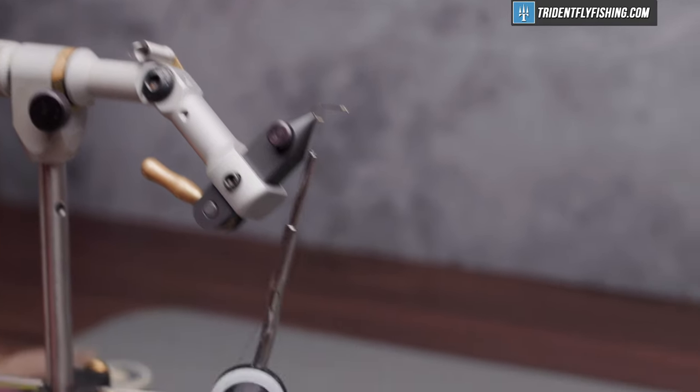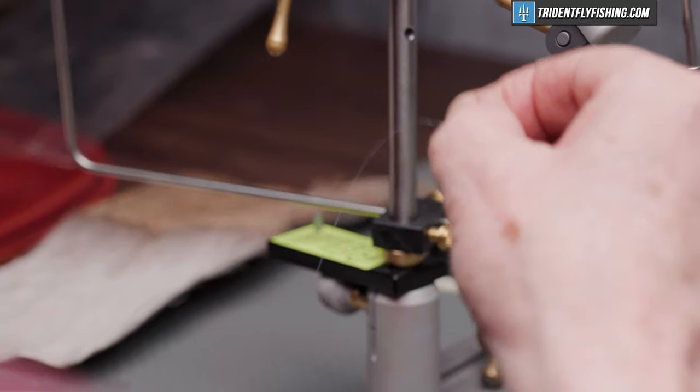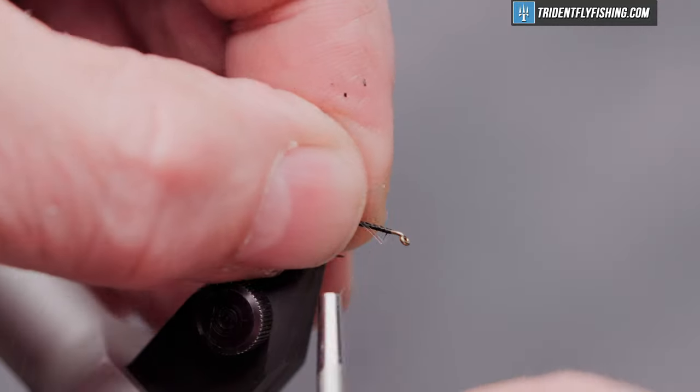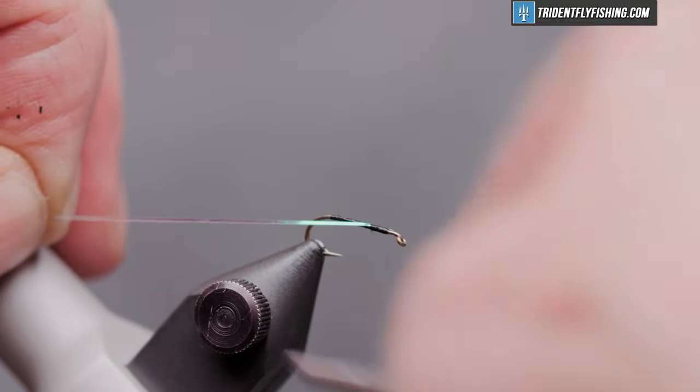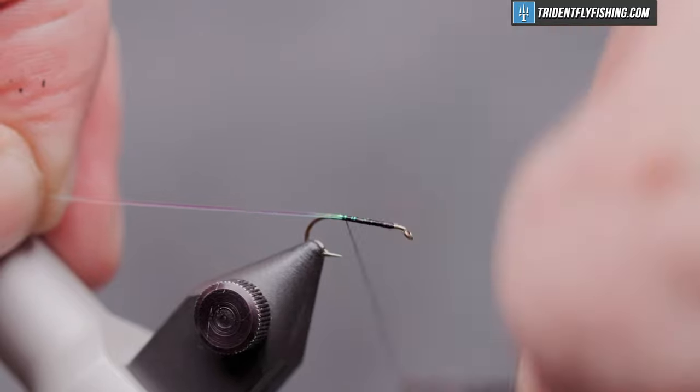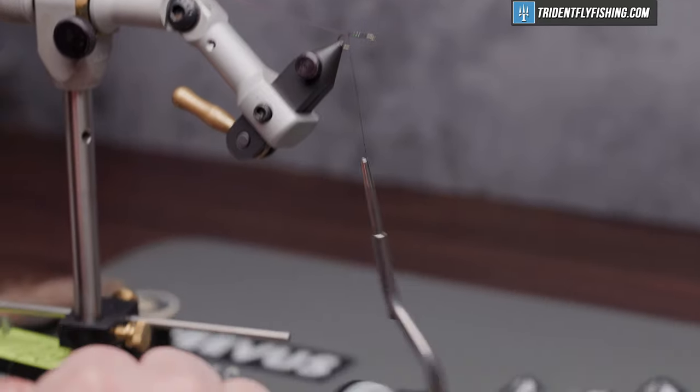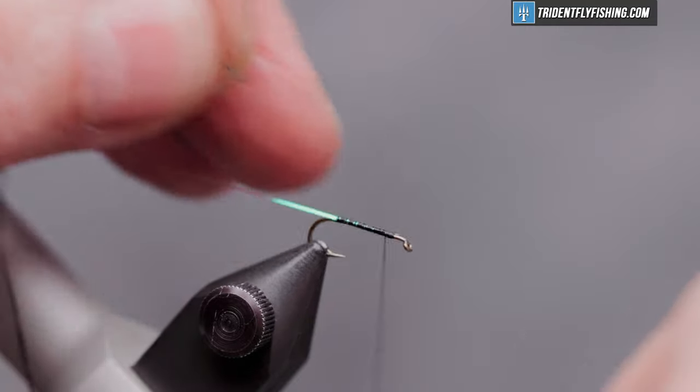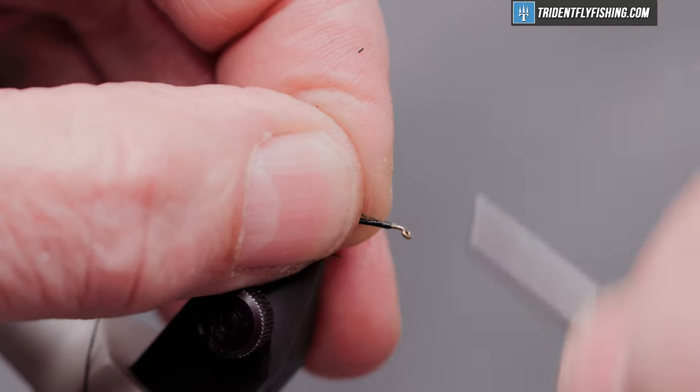The first material we're going to tie in is just going to be a piece of pearl flashaboo. This is going to be for the rib of the fly. I'll tie this in on the near side of the hook. And to help reinforce that a little bit, we're going to tie in a piece of six-aught danville. That's to protect that flashaboo in case a fish gets its teeth in it.